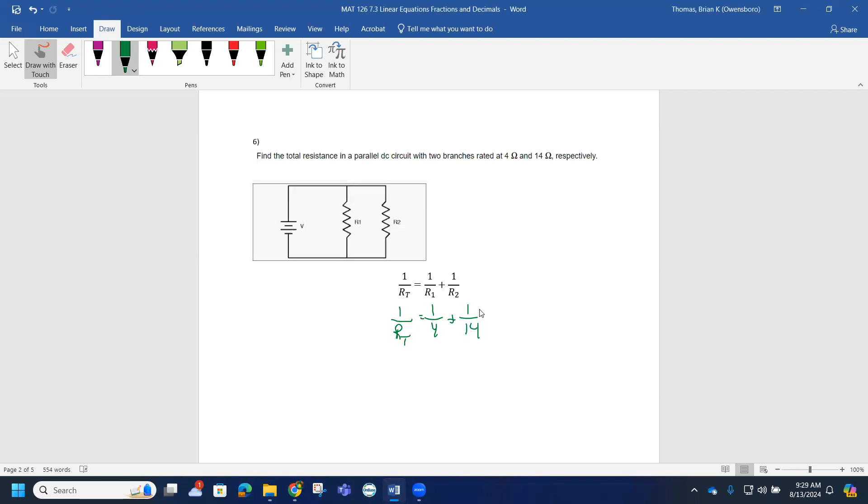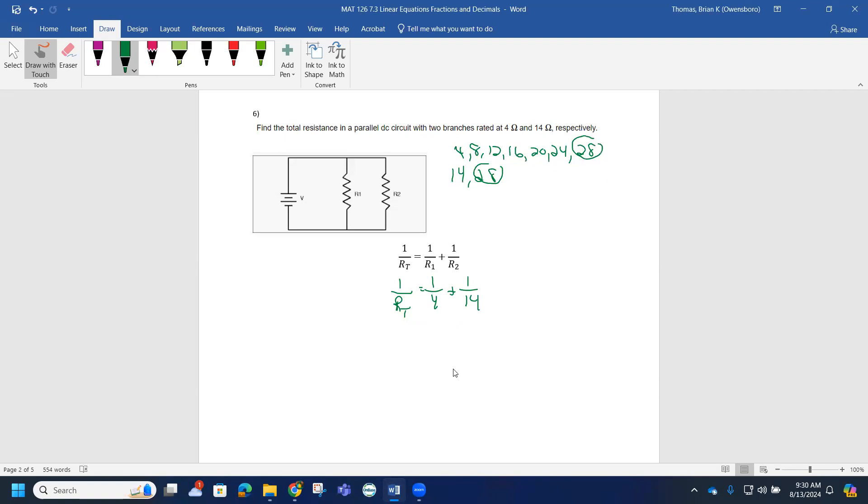One thing we can do is multiply by a common multiple. If we think about the multiples of 4 and 14: 4 would be like 4, 8, 12, 16, 20, 24; 14 would be 14 and 28. So I gotta go a little bit further—28 would be the next multiple of 4, so 28 would be a number we could use to get rid of fractions per se. Now notice that there's also this Rt, so what we need to do to get rid of fractions is we need to multiply by 28Rt.